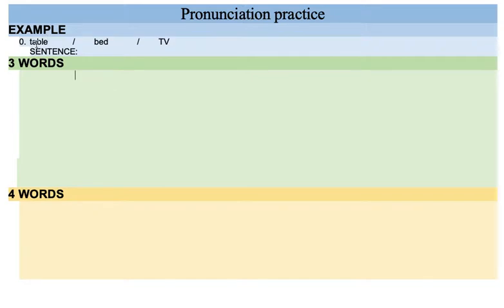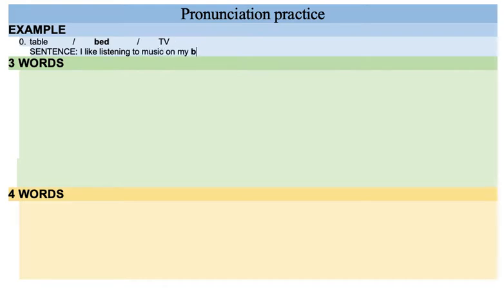For example, I have here table, bed and TV. I tell you, this is pronounced table. As you hear table, you repeat with me: table. Then you say table, bed, TV. And after I pronounce the three of them, I choose one and say, ready? Number zero: bed. So you say the answer is bed, you select bed and you write a sentence. For example, 'I like listening to music on my bed.' You use the word that I have chosen. This is pretty easy because table, bed and TV are very different. But now I'm going to show you words that are very, very similar. Let's see what you can do.